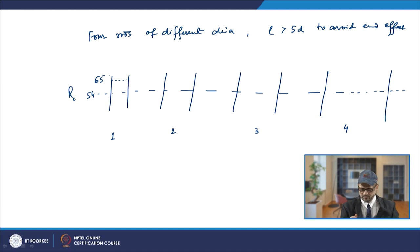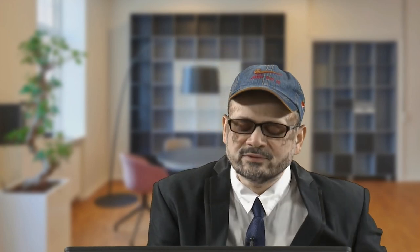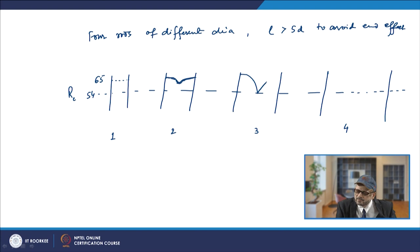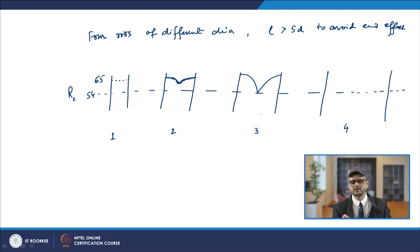As you go to the second rod, the cooling rate at the center will decrease. As the rod becomes thicker and thicker, the cooling rate at the center becomes smaller and smaller, so the hardness achieved at the center goes on decreasing. As you keep increasing the diameter, you will come to a certain diameter where at the center you have 50% martensite and 50% pearlite. This diameter is known as the critical diameter.